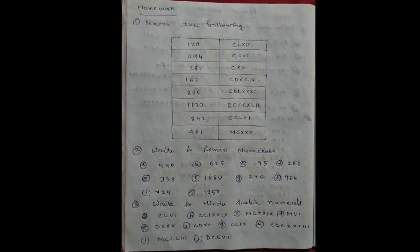Number 3: Write in Hindu-Arabic numerals: CLVI, CCLXI, MCXXI, MVID, DXXV, CDXX, CCIX, CCCXXX, MXXX, MCCCIII, DCCVIII. I hope you all will do this correctly.